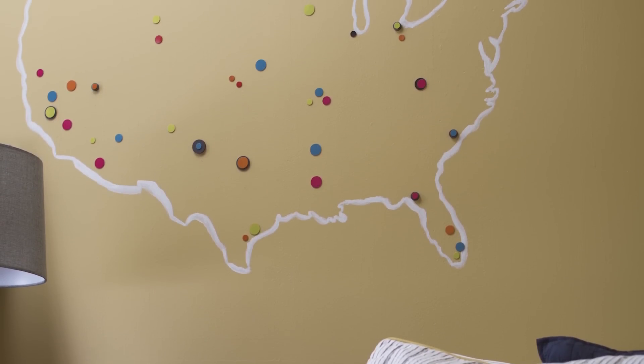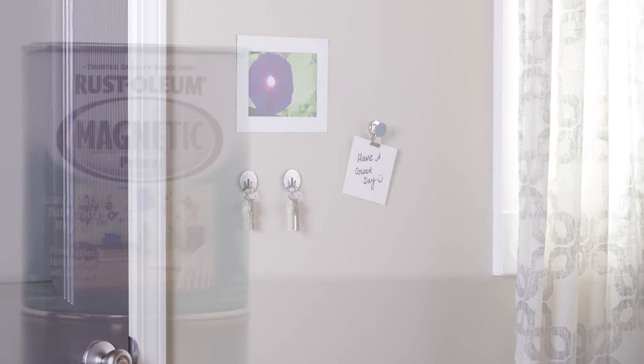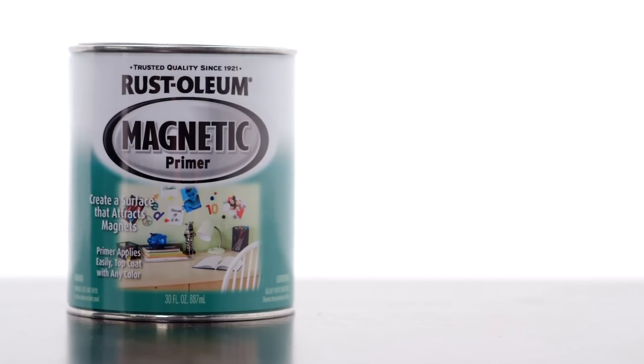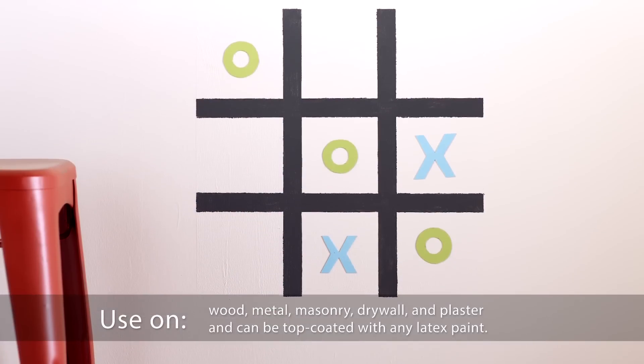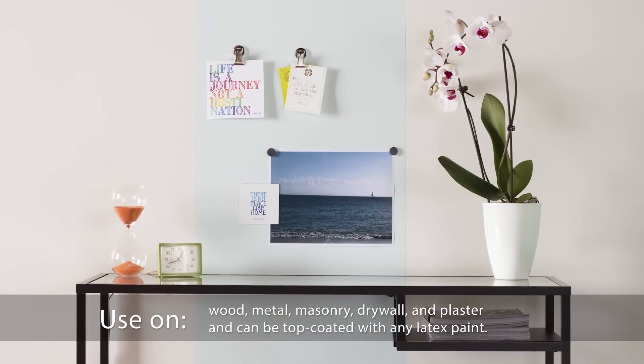Magnetic. Versatile. Always functional. Transform a simple surface into one that attracts and inspires with Rust-Oleum Specialty Magnetic Primer. Time to put the fun in functional as you turn an ordinary surface into an extraordinary magnetic finish that you can enjoy for years to come.